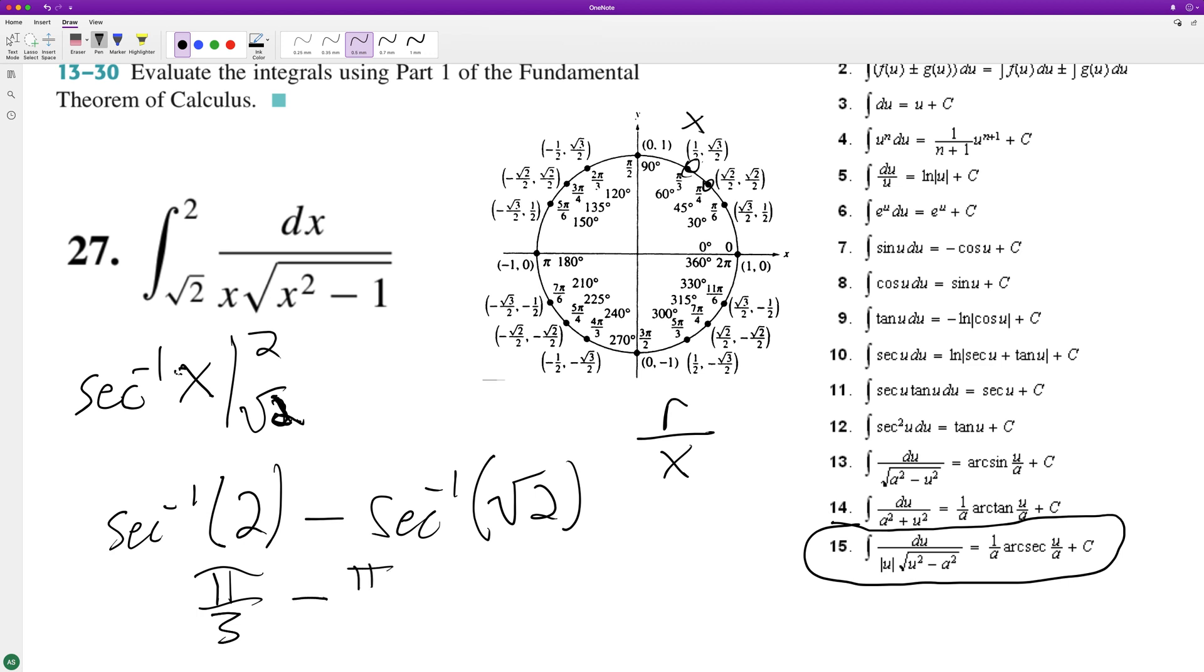So these can't be subtracted directly. We get common denominators: 4 pi over 12 minus 3 pi over 12 is equal to pi over 12.